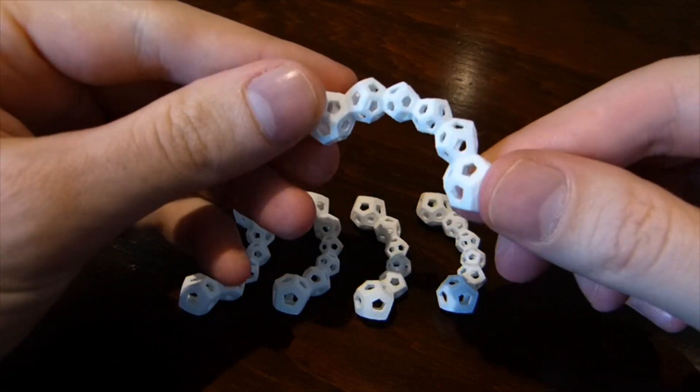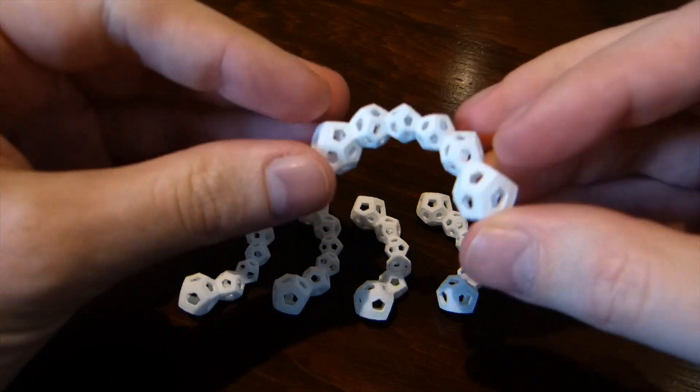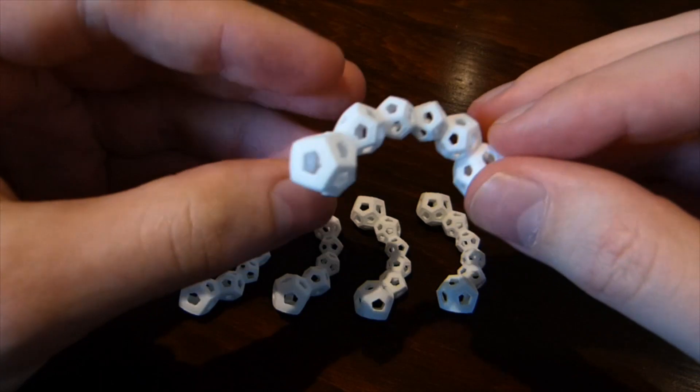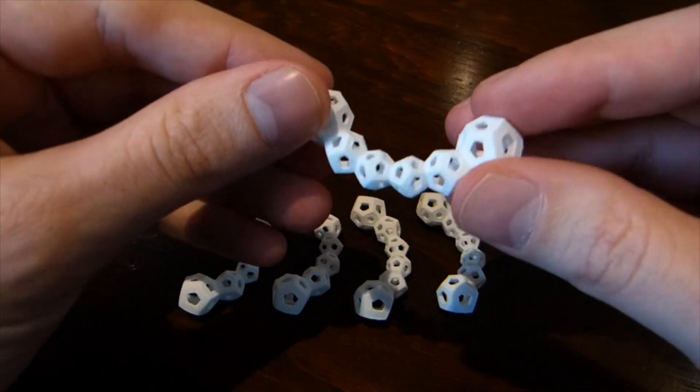So there are five identical pieces. Each one has this shape. There are these six kind of curvy dodecahedra that curve around in this arc.